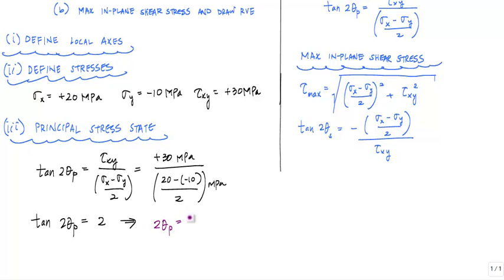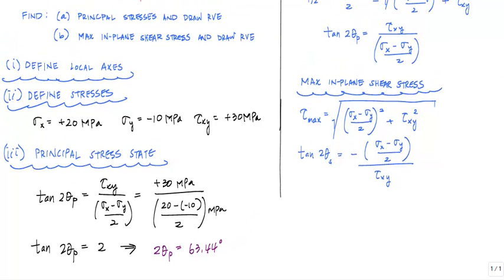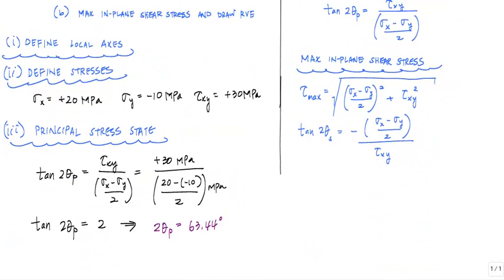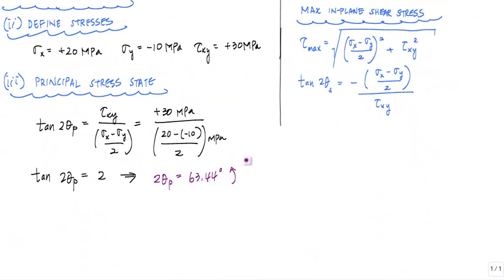Solve for 2 theta p, we get 63.44 degrees. And any positive number is associated with a positive rotation as these equations were defined, which is counterclockwise. So this indicates counterclockwise.